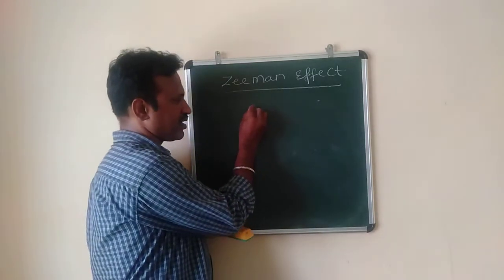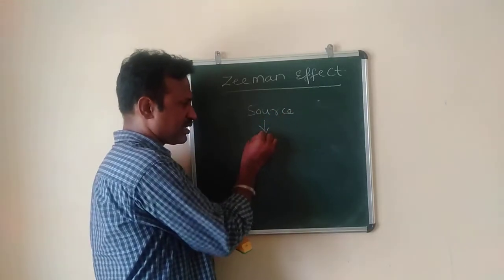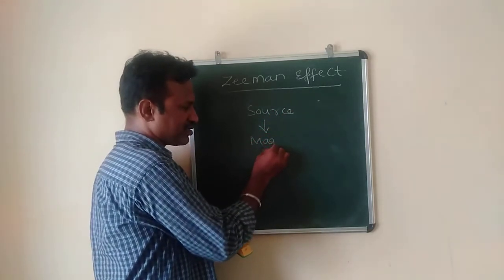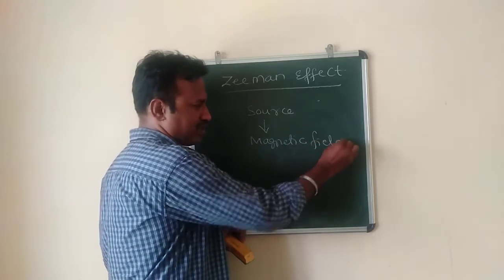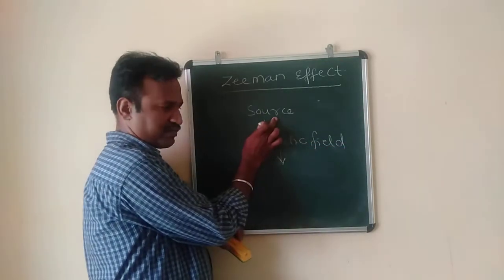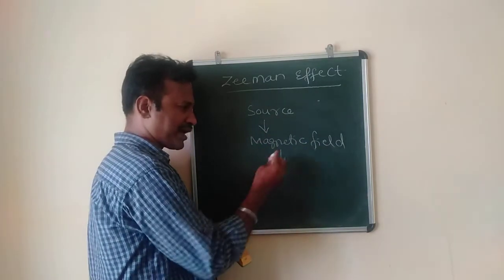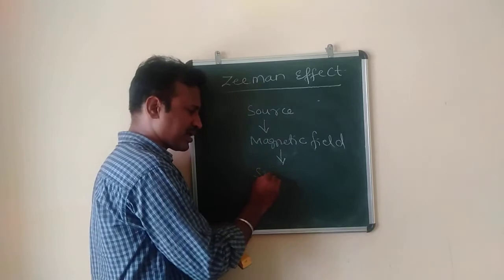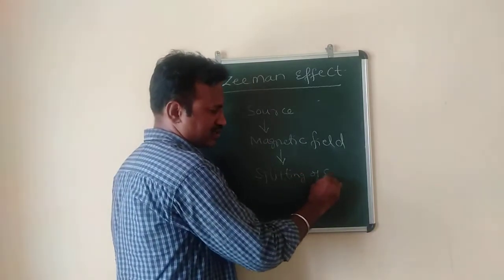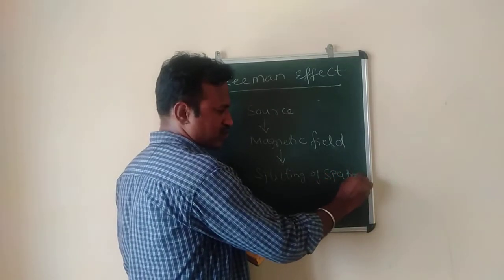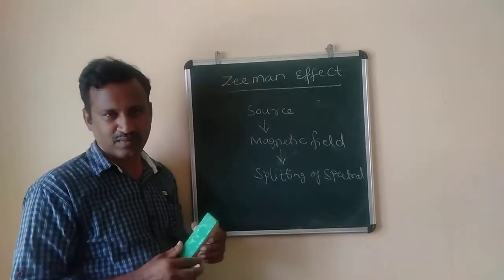Whenever we have any source of light which is producing a spectrum, if this source is placed in a magnetic field, there is a splitting up of the spectral lines. Whenever we place a source of light in the presence of a magnetic field, there is splitting up of spectral lines. This is what we call the Zeeman effect, and it is one of the failures of Bohr's atomic model.